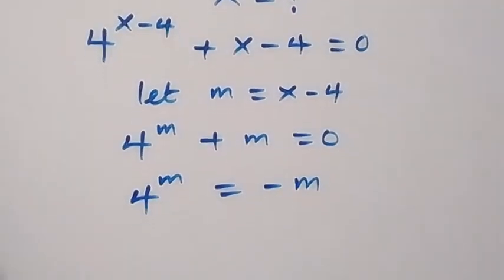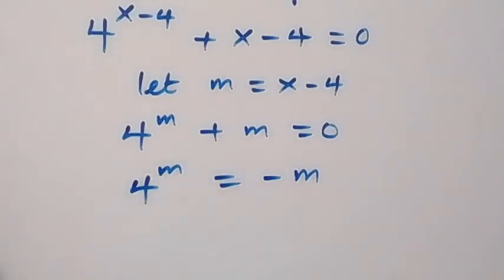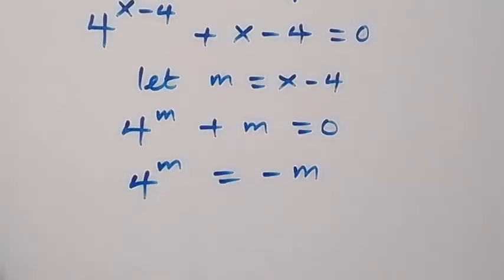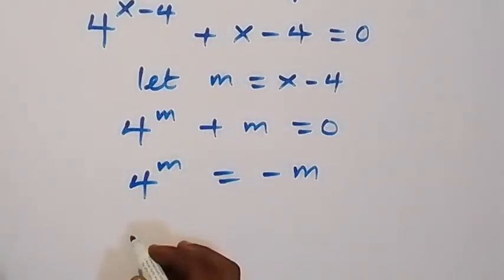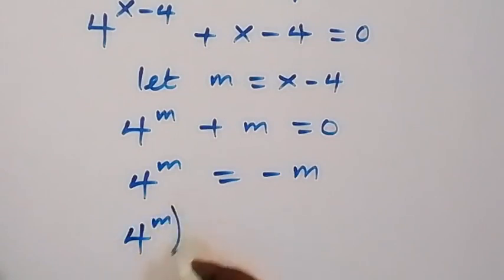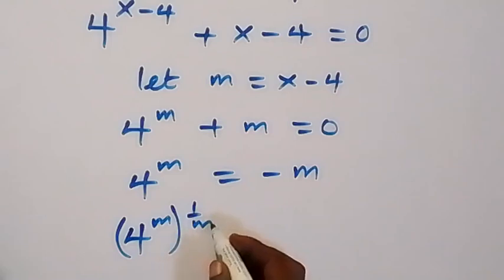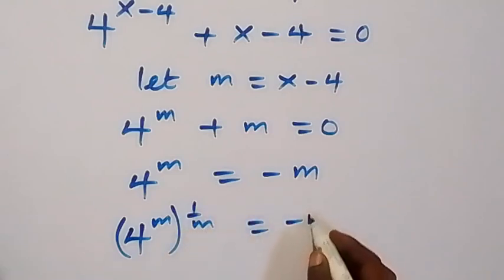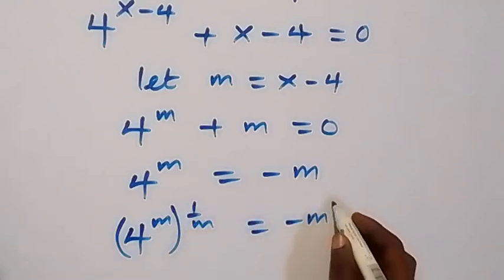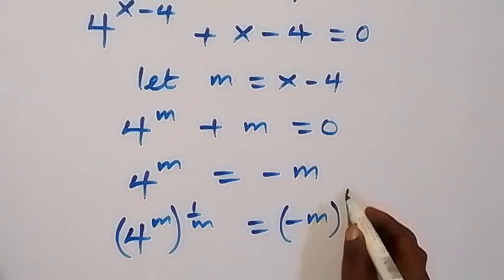Then, to remove this power m here, let's multiply both powers by 1 over m. Then we have 4 raised to power m, then raised to power 1 over m, equals to minus m also raised to power 1 over m.